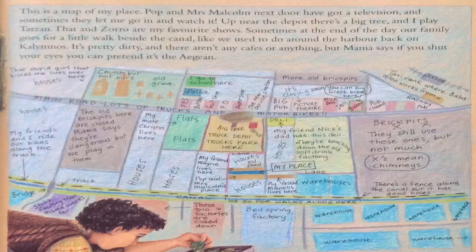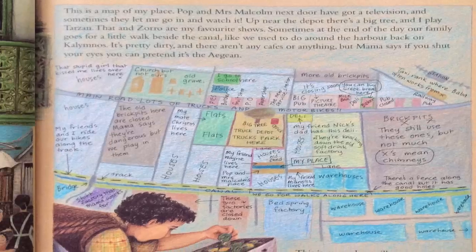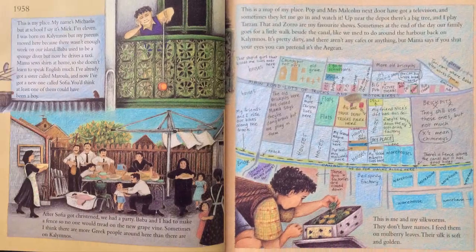This is a map of my place. Up near the depot there's a big tree and I play Tarzan — that and Zorro are my favourite shows. This is me and my silkworms. They don't have names. I feed them on mulberry leaves. Their silk is soft and golden.